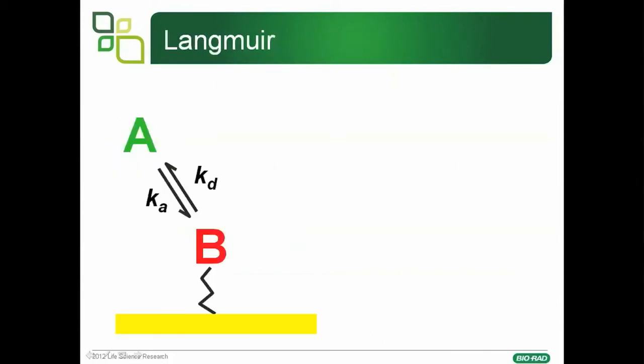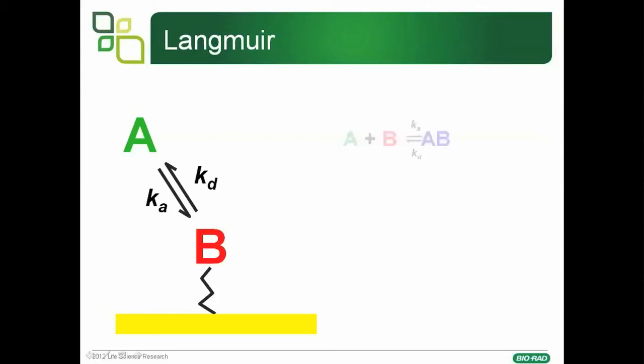For purposes of SPR, typically the ligand is coupled or captured on a surface and the analyte is flown over, denoted A here. They come together with a rate constant Ka and fall apart with a dissociation rate constant Kd, as illustrated in this graphic.